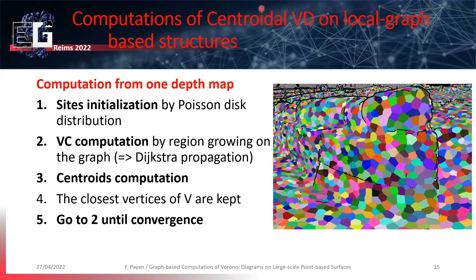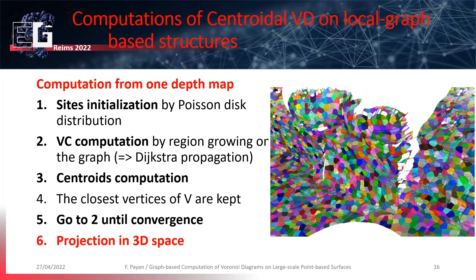The workflow is actually very common. A set of sites is selected on the graph associated to the depth map, with a Poisson disk distribution for instance. Then, cells are computed by region growing along the edges of the graph. Finally, centroids are computed still on the graph. We go back to step 2 until convergence. At the end, we have a partition of the graph which can be projected into 3D space to get the partition of the underlying surface.